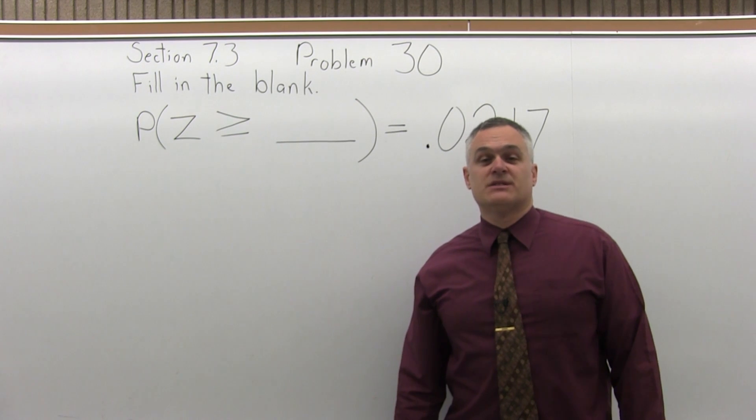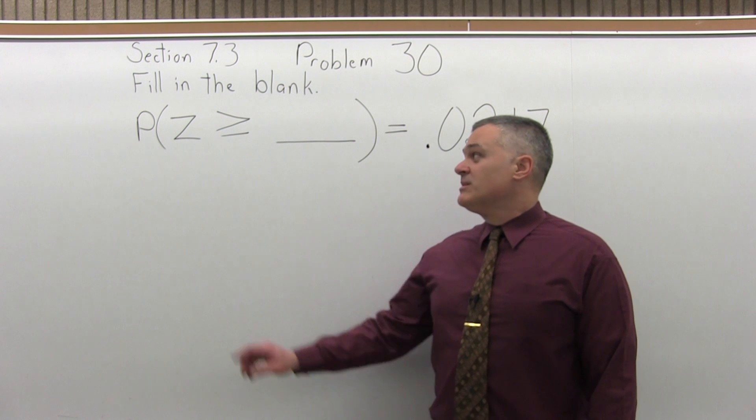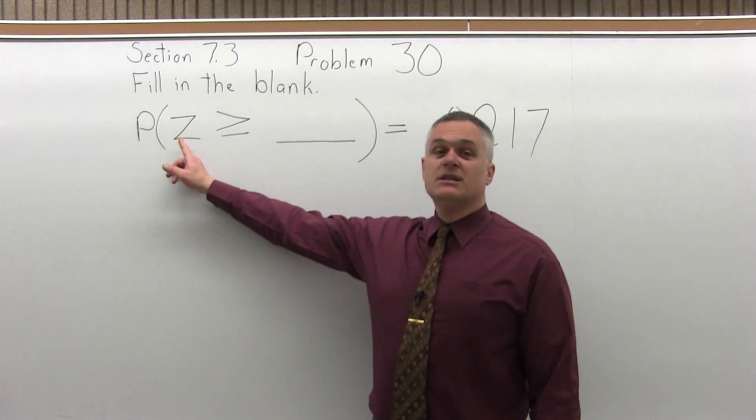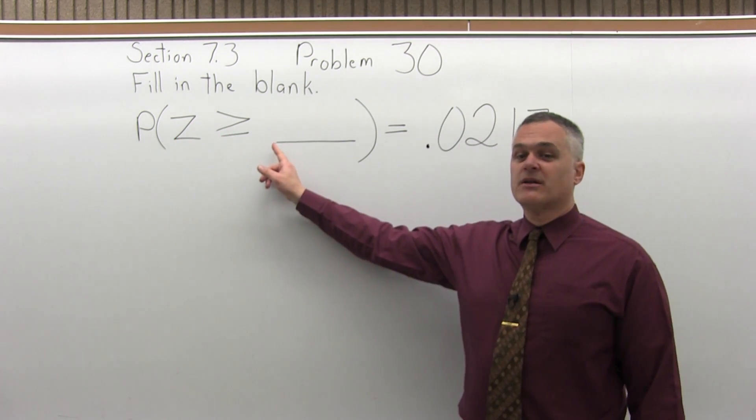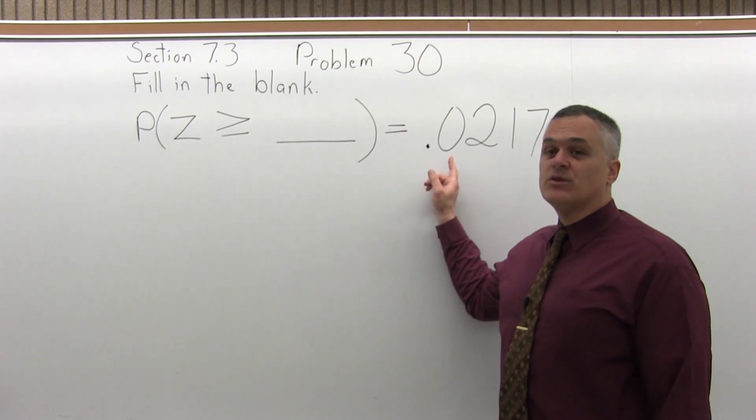This is Section 7.3, Problem number 30. Fill in the blank: the probability that Z is greater than or equal to blank equals .0217.